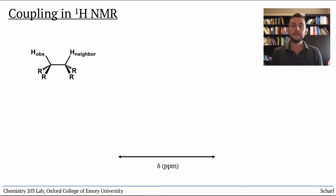Let's look at a simplified system of two neighboring protons, the observed proton and its neighbor. Just based on its location and electronic environment within the molecule, H observed would absorb some particular frequency of photon. That is, it would have some chemical shift, delta.